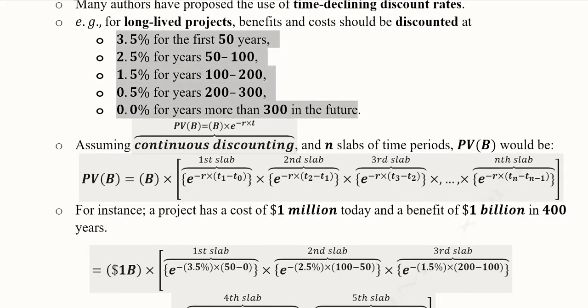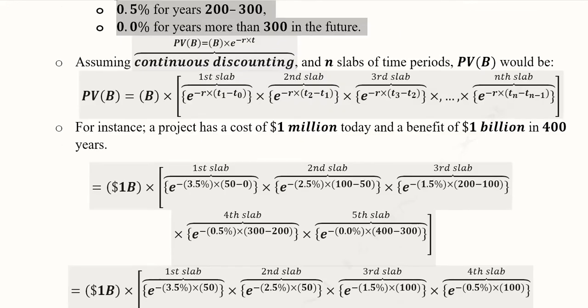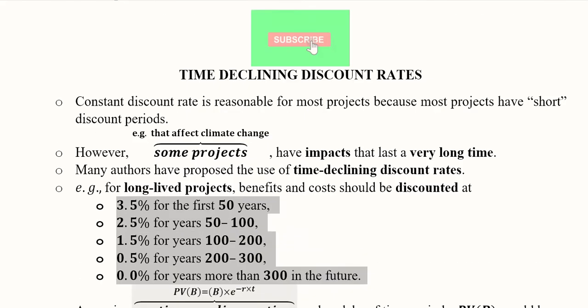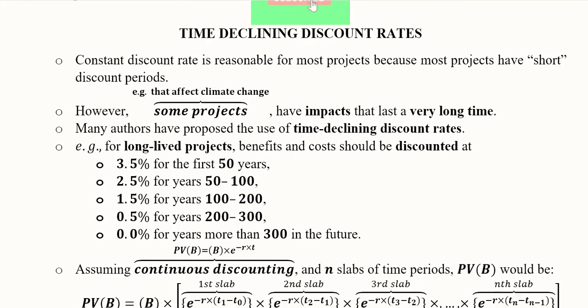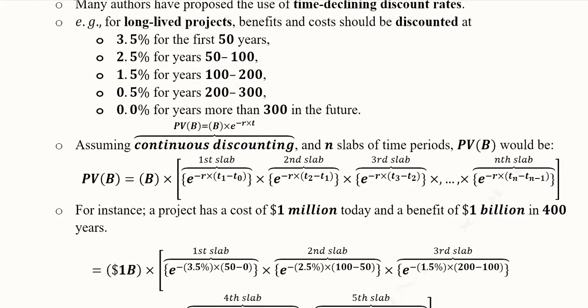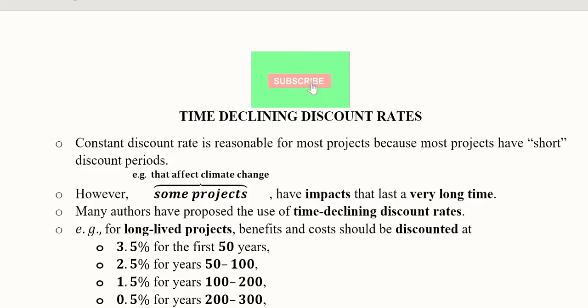This is the formula and this is the numerical solution of a situation where we have a very lengthy project which is intergenerational in nature, due to which we have to adopt the time declining discount rates in order to mitigate the effect of the discounting in the far future. Thank you.